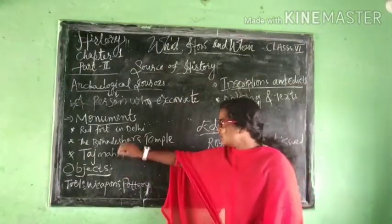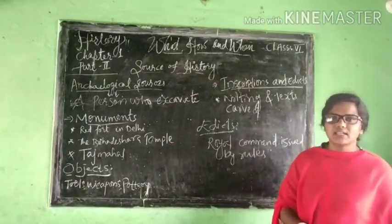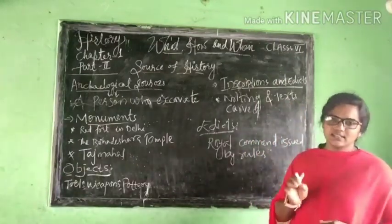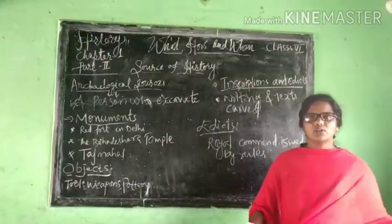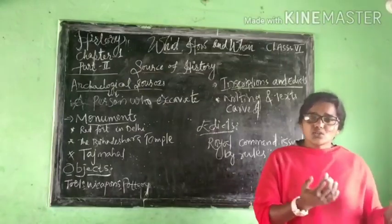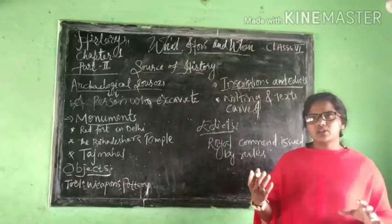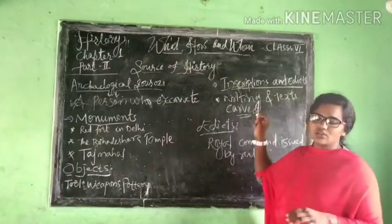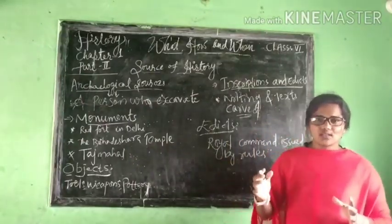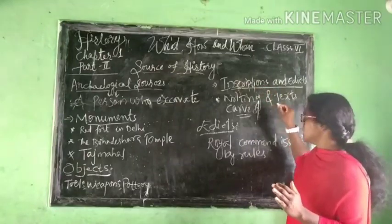The third archaeological source is inscriptions and edicts. What is inscription? Inscription refers to writing and text carved on stones, walls of temples, caves, palaces, or copper plates. In olden times there were no paper and pen, so people carved what they wanted to write on pillars, stones, or buildings. That was their writing. Writing carved on stones is known as inscription.